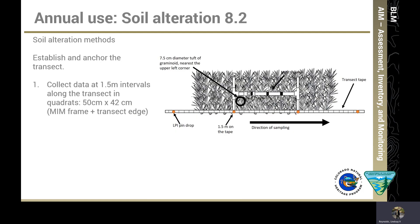The second method in the annual use section is called soil alteration, Section 8.2. Establish and anchor the transects if they have not been established earlier. Collect data at 1.5-meter intervals along the transects in quadrats designated by your MIM frame — the same area used for stubble height, so you can leave the MIM frame in place. The MIM frame is 50 centimeters along the transect and 42 centimeters wide. For soil alteration, you imagine five lines across your MIM frame quadrat: one at each end, and three evenly spaced lines throughout the quadrat spaced 12.5 centimeters apart, shown here as red dashed lines.